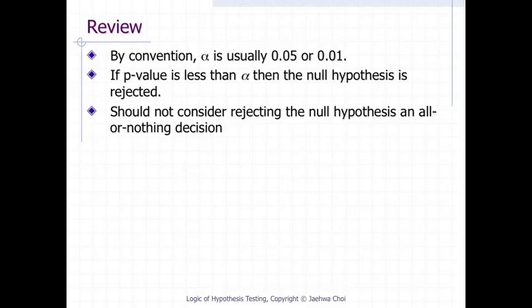As discussed in the introduction of hypothesis testing, it is better to interpret the probability value as an indication of the weight of evidence against the null hypothesis, than as part of a decision rule for making a reject or do not reject decision. Therefore, keep in mind that rejecting the null hypothesis is not an all-or-nothing decision.